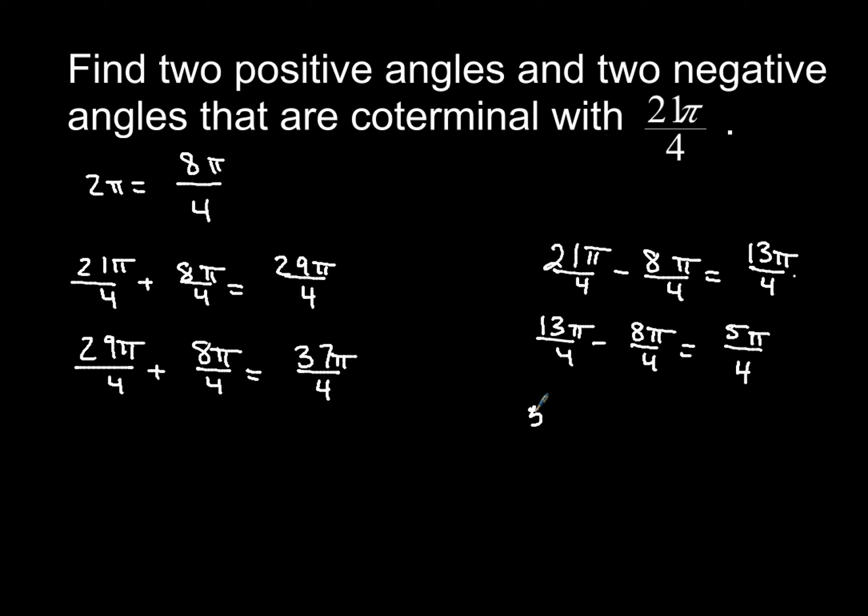So 5π over 4 minus 8π over 4. And lo and behold, we finally get a negative one. So we would have negative 3π over 4. But wait, we need to find 2. So we'll just start right there from negative 3π over 4. And we'll subtract 8π over 4. And then, holy moly, we are done now. We get negative 11π over 4, and we are finished.